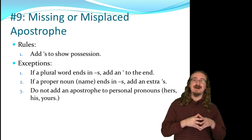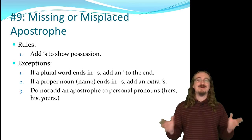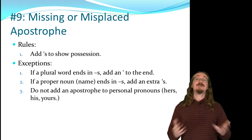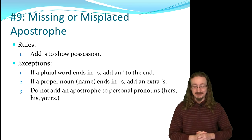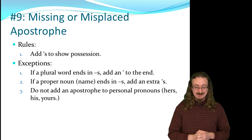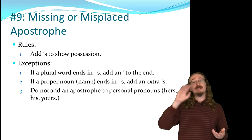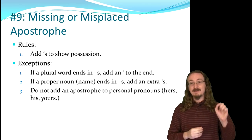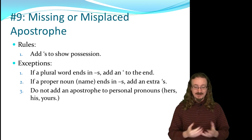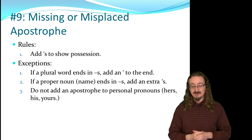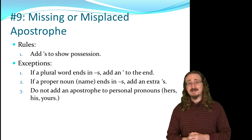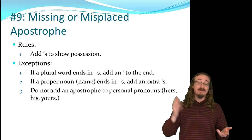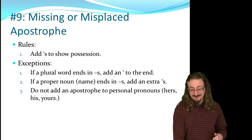Number 9: the missing or misplaced apostrophe. The general rule is you add apostrophe S to show possession. If the word already ends in S, just put the apostrophe at the end. If it's a name like Socrates, you still add the apostrophe S. Do not add an apostrophe to personal pronouns — so 'hers' or 'yours' get no apostrophe. Some exceptions exist depending on style preferences, but these are the standard rules.